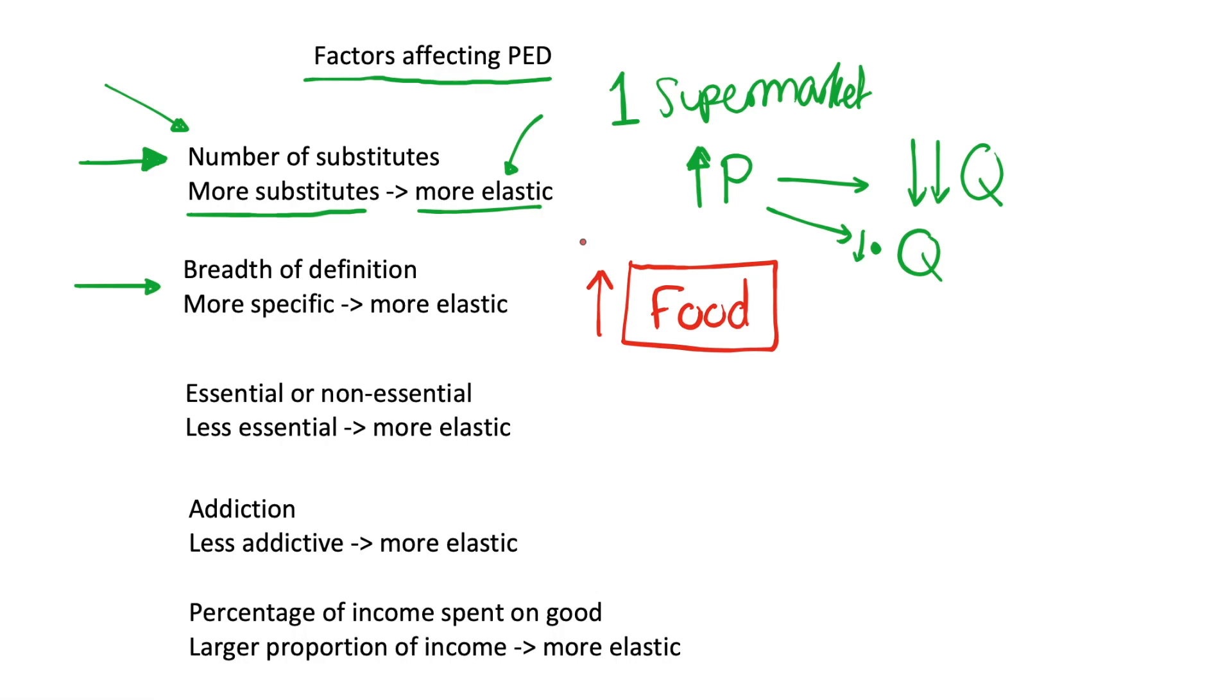we're not going to reduce our demand for food because we need it to survive. So this is going to be very price inelastic. However, if we define our good much more specifically and we look at a particular type of food, let's say pasta, if the price of pasta increases, well, we can just switch to something else. Maybe we'll buy bread instead.